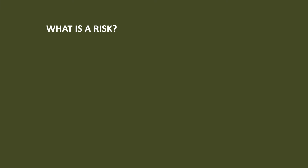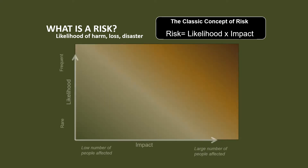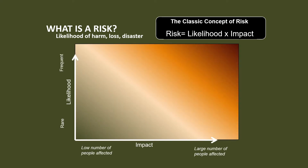So what is a risk? The traditional and dominant definition of risk is the likelihood of harm, loss, or disaster. In equation form, risk is equal to likelihood times impact. We can place that in a chart when we compute it. One axis would be likelihood, the other axis would be impact. Then we can classify hazards as low priority, medium priority, or high priority.